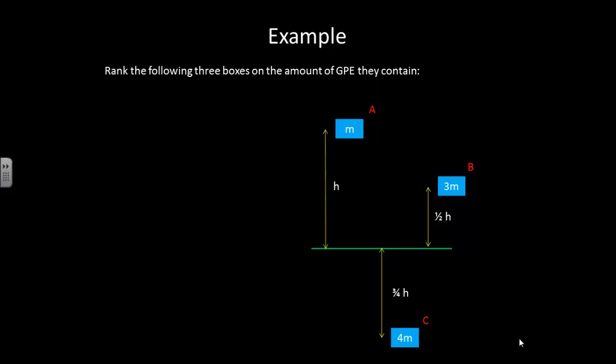So let's just do a little example. I want to rank the following three boxes on the amount of gravitational potential energy they contain. So we're going to consider our green line to be the h equals zero height, or our gravitational potential energy equals zero position. And we have one mass that's mass m at a height h above. We have a mass that is 3m at a height one half h above, and then we have a mass 4m that's three quarters of the h below this, what we consider to be our h equals zero line.